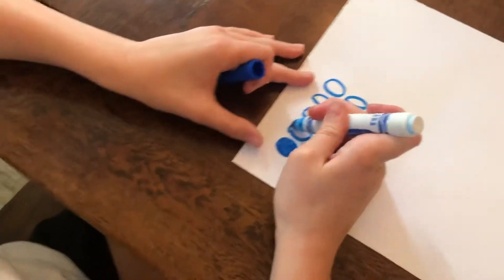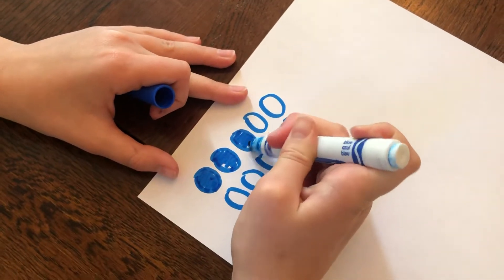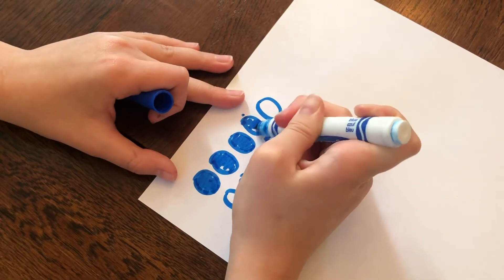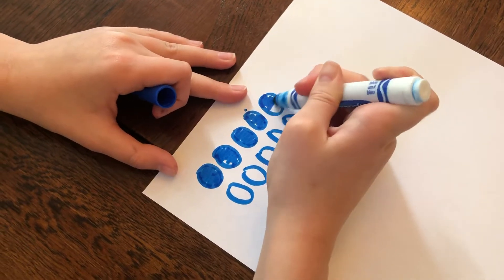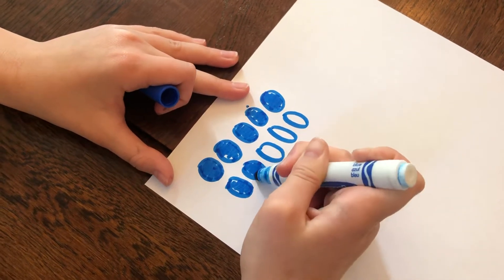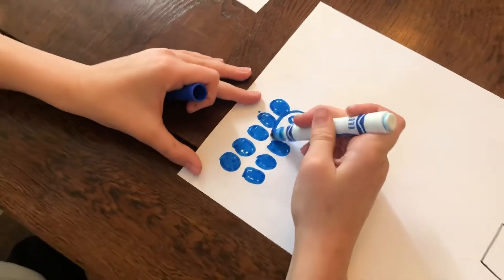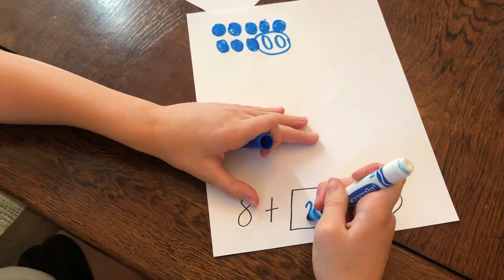Yes. 1, 2, 3, 4, 5, 6, 7, 8. And it looks like here that I have 2 that are not colored in. So I could put a 2 right here.